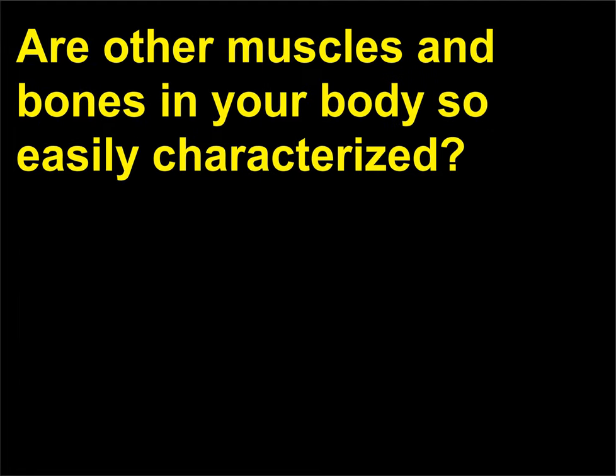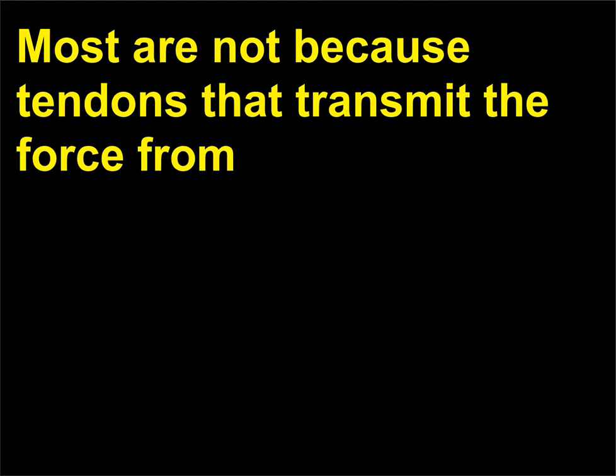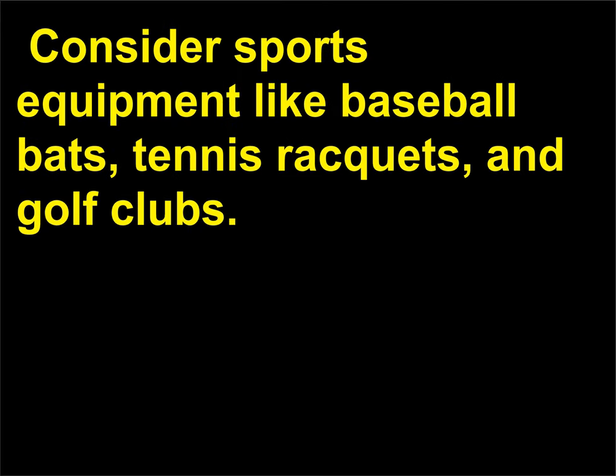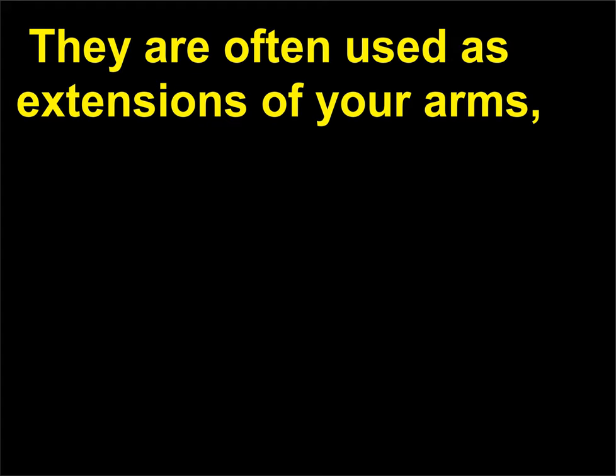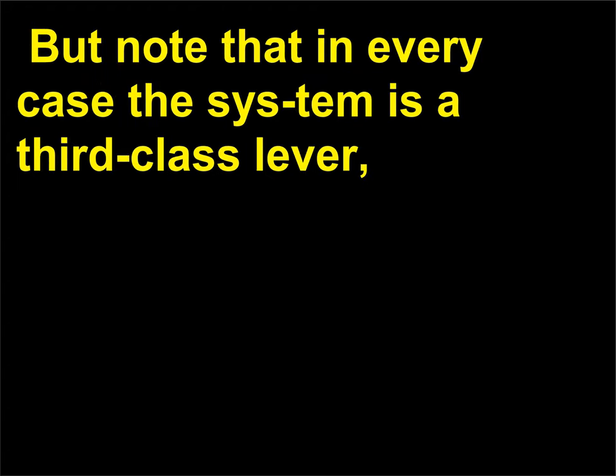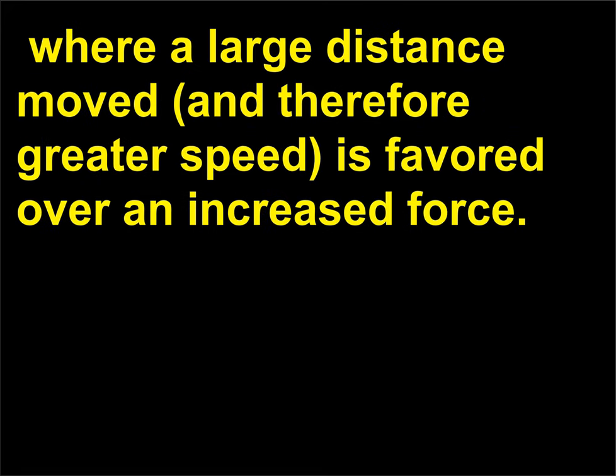Are other muscles and bones in your body so easily characterized? Most are not because tendons that transmit the force from the muscle to the bone are long and go through several bends. Consider sports equipment like baseball bats, tennis rackets, and golf clubs. They are often used as extensions of your arms. So the person plus the bat or club has to be examined together. But note that in every case the system is a third class lever, where a large distance moved, and therefore greater speed, is favored over an increased force.